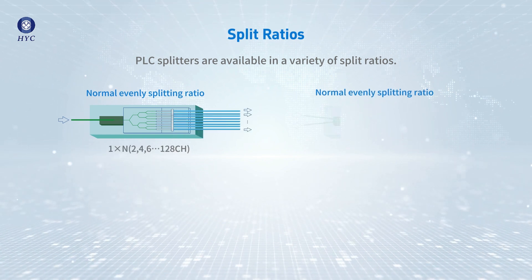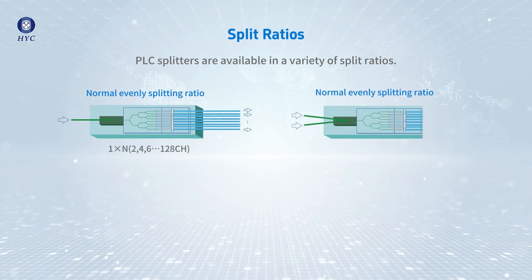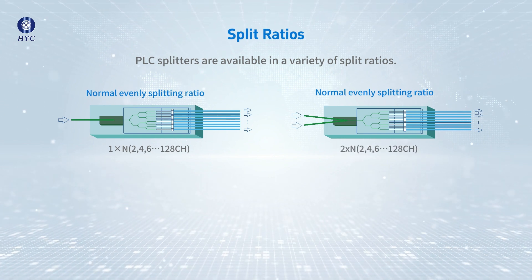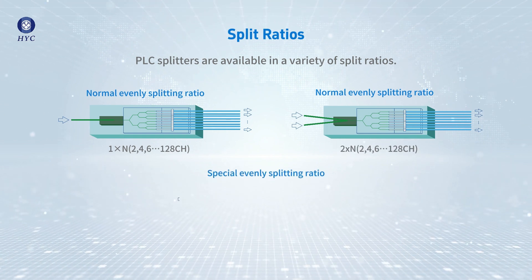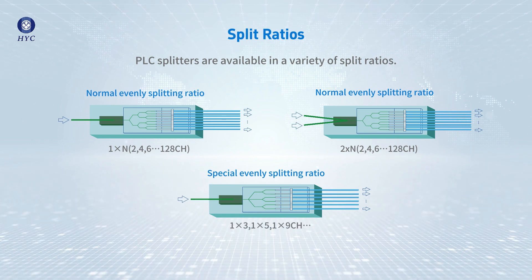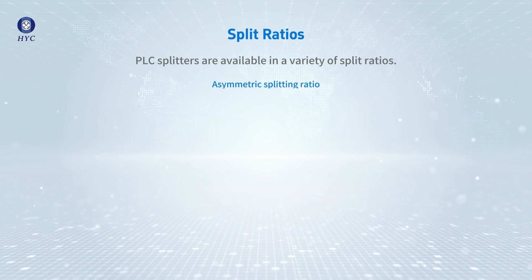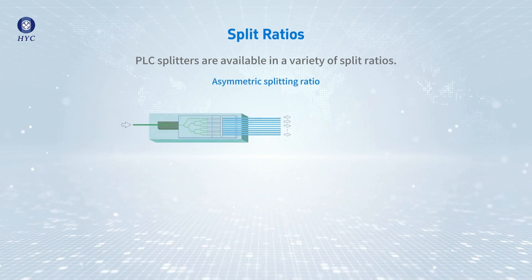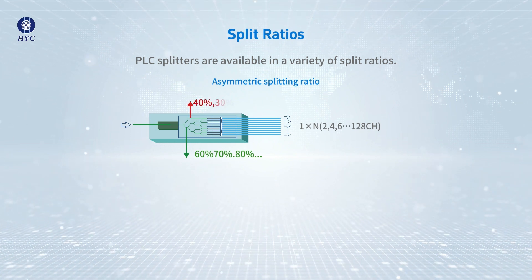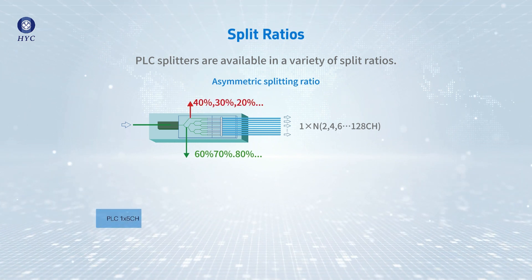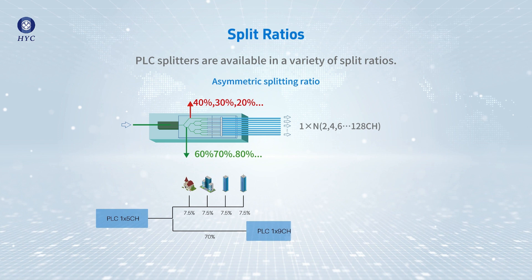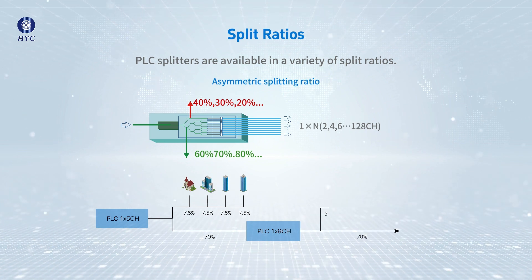PLC Splitters are available in a variety of split ratios. The most common splitters are uniform power splitters with a 1xN or 2xN splitting ratio. HYC also provides asymmetrical PLC splitters, offering asymmetrical division of input optical signal energy into several output channels.